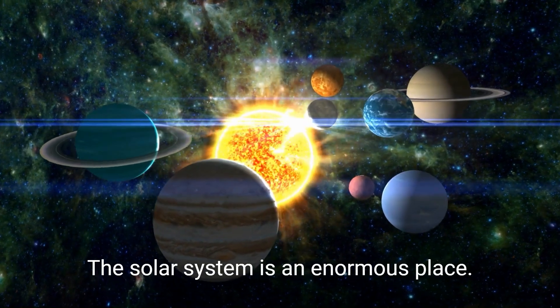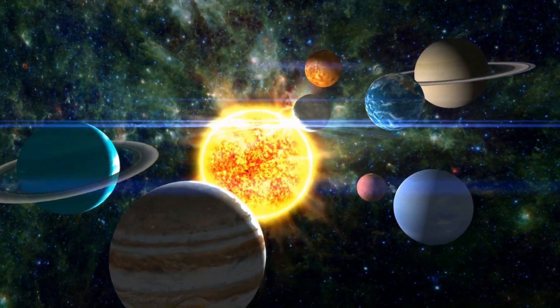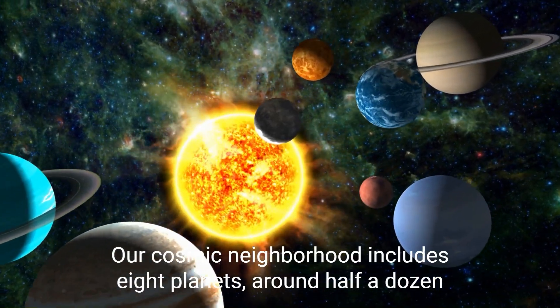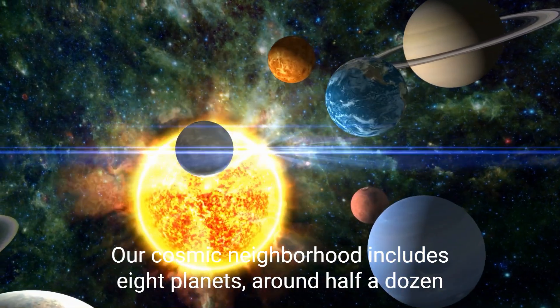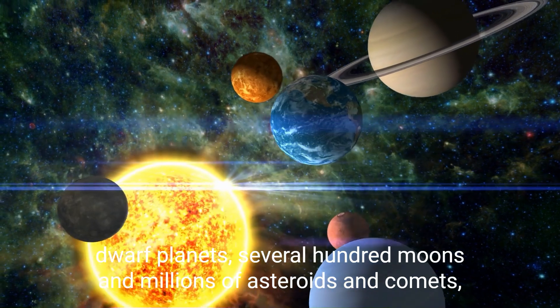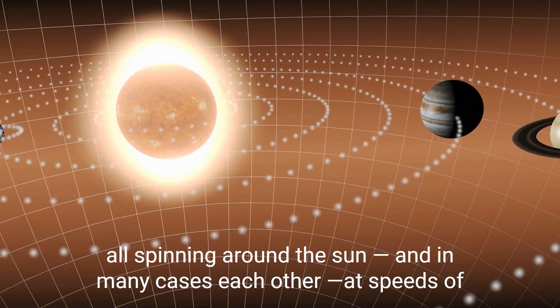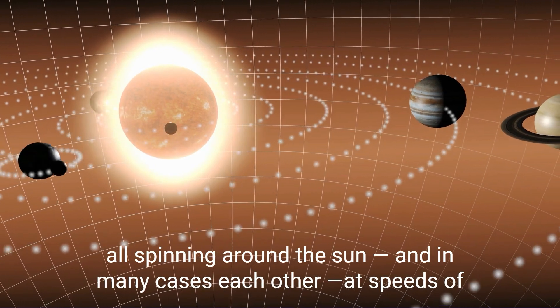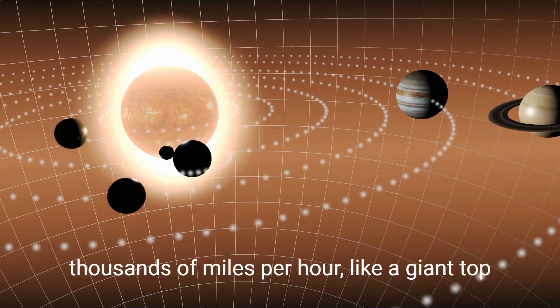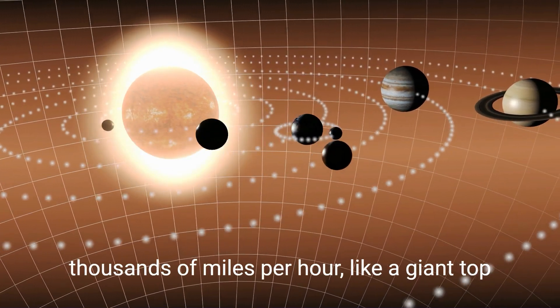The solar system is an enormous place. Our cosmic neighborhood includes eight planets, around half a dozen dwarf planets, several hundred moons and millions of asteroids and comets, all spinning around the sun and in many cases each other at speeds of thousands of miles per hour, like a giant top.